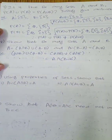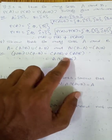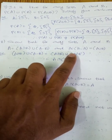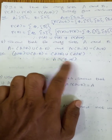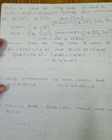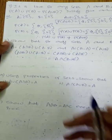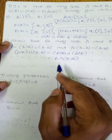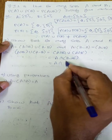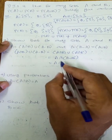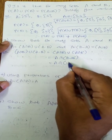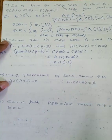A minus B equals A intersection B complement. Now, using A intersection B union A intersection B complement equals A intersection (B union B complement), and B union B complement is the universal set.